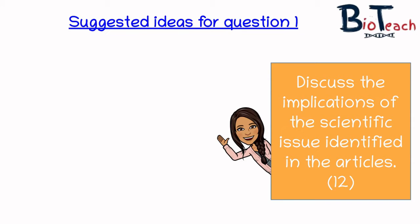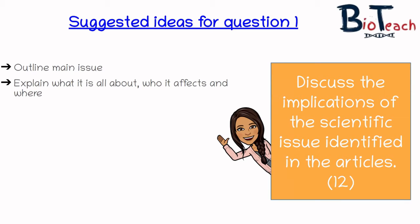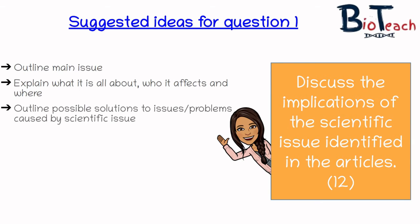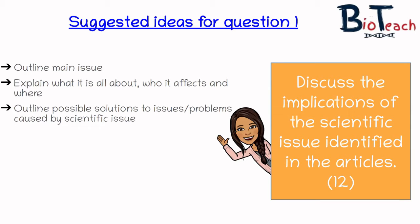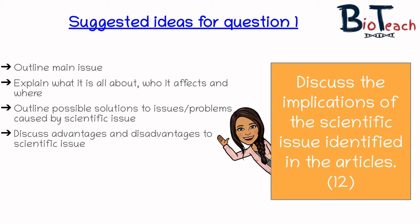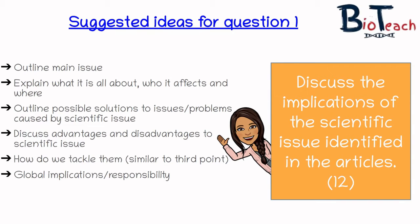When looking at question one, there are various things to consider. In your plan and essay you might want to outline the main issue as the opening sentence — explain what it's about, who it affects, and where. For example, is it a global issue or a local one? You might want to outline possible solutions or problems caused by the scientific issue, which can form a whole paragraph. You could discuss advantages and disadvantages and how you would tackle them, and perhaps consider the global implications or the responsibility we have.